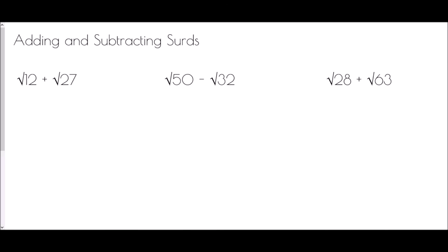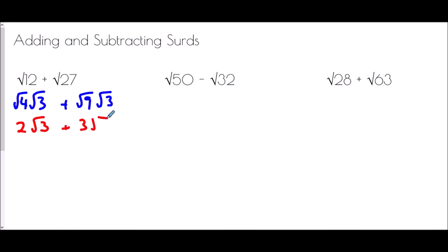So finally, adding and subtracting surds — this is where we bring together everything we've just looked at. To add and subtract surds we first need to simplify them so we can see if we get a common term. Root 12 becomes root 4 times root 3, and root 27 becomes root 9 times root 3, because 4 times 3 is 12 and 9 times 3 is 27. So root 4 is 2, giving 2 root 3, and root 9 is 3, giving 3 root 3.